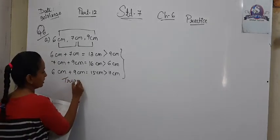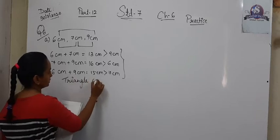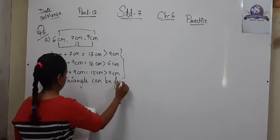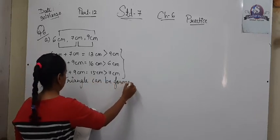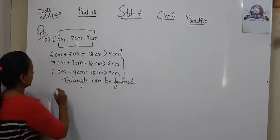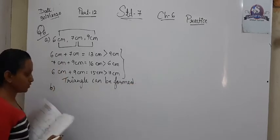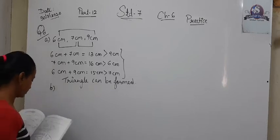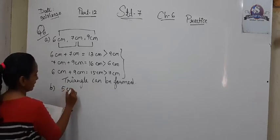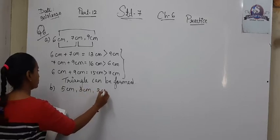So the triangle is possible — triangle can be formed. Here I am giving you some more sums for practice. Next set is 5, 3, and 2.